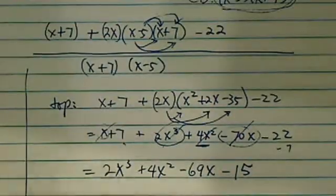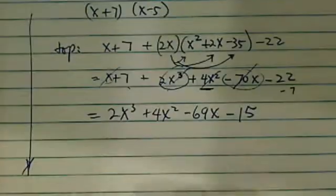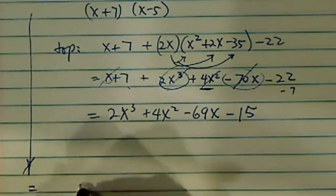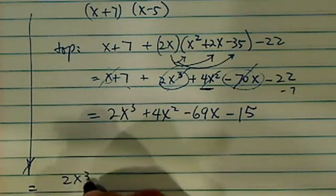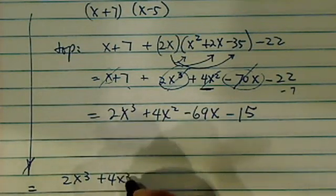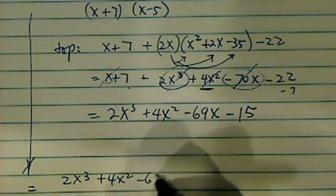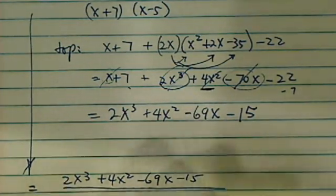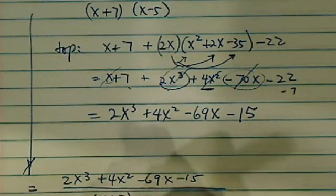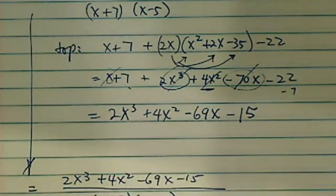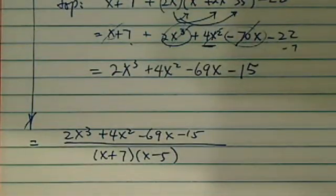That's the top. So from the previous one, all the way down here, this is equal to 2x cubed plus 4x squared minus 69x minus 15, all of this divided by the common denominator, which is x plus 7 times x minus 5.